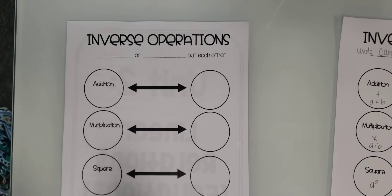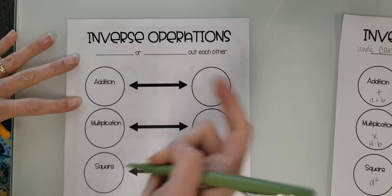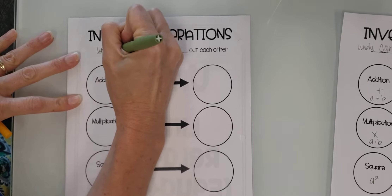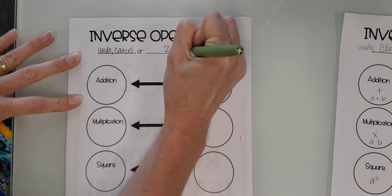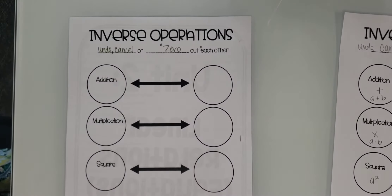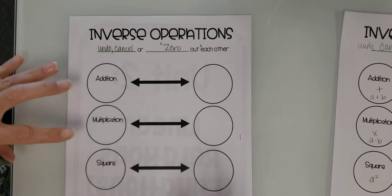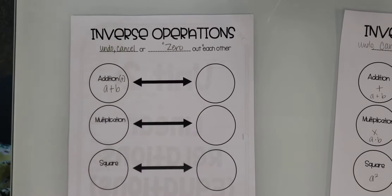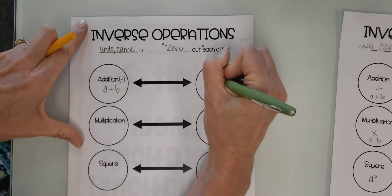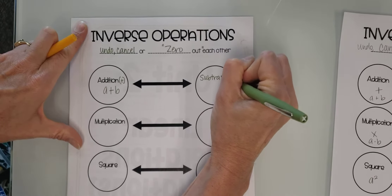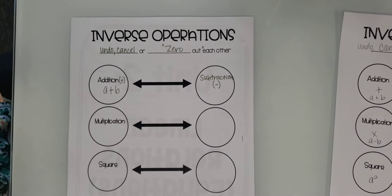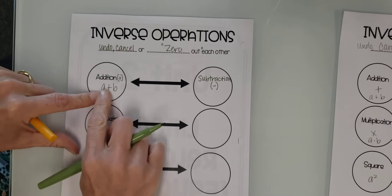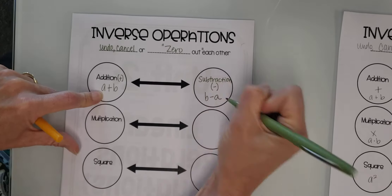Inverse operations are operations that are opposite of each other. They undo, cancel out, or zero out each other. So with addition — remember addition is just the plus sign — this might look something like some number plus another number. The opposite or the inverse of addition is subtraction. Subtraction is what undoes addition, and vice versa. So the opposite of subtraction is addition — they go back and forth. So if this one's A plus B, this one would be B minus A.